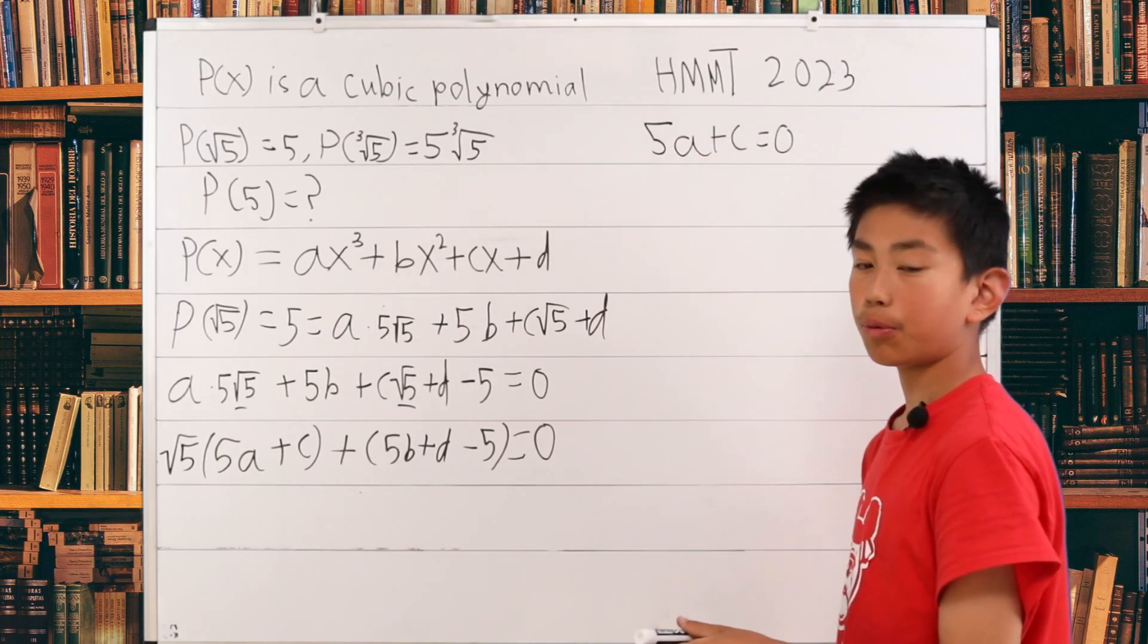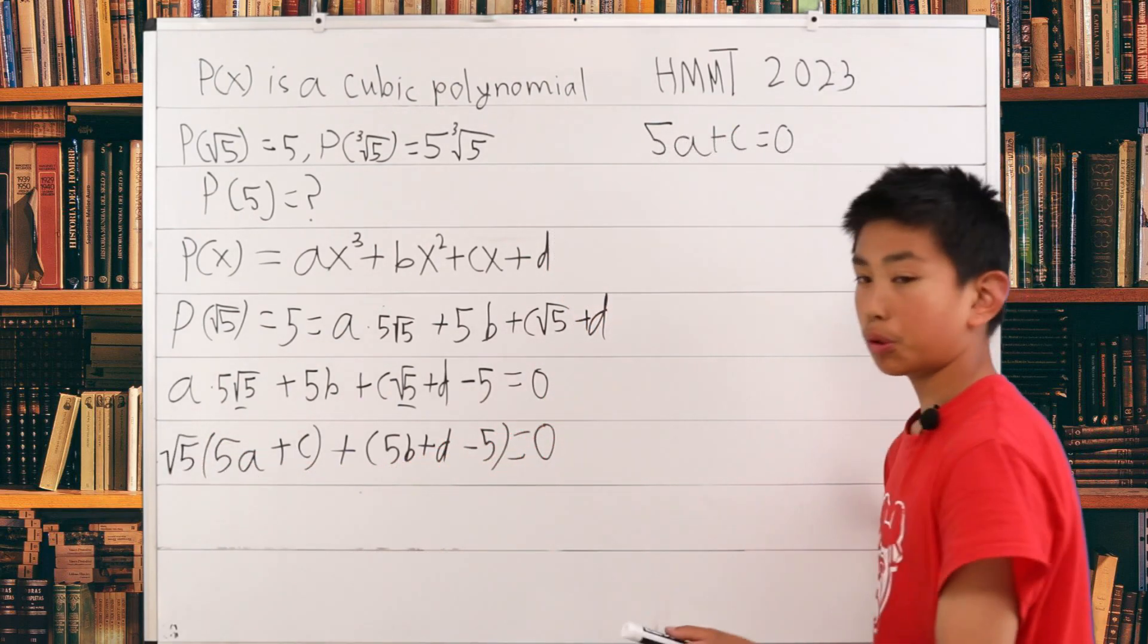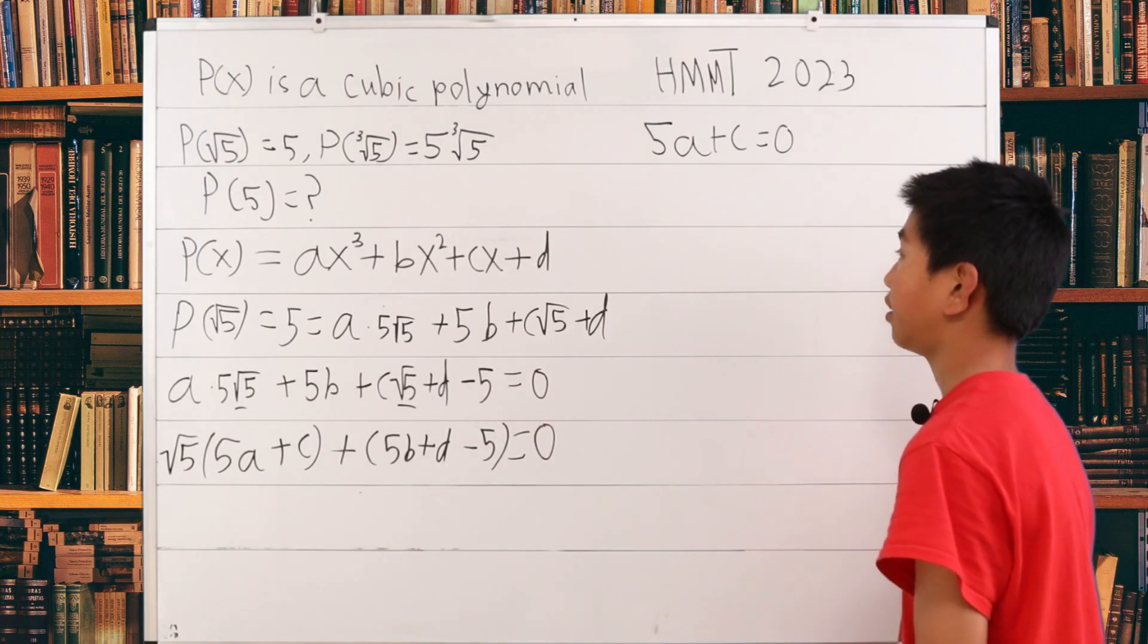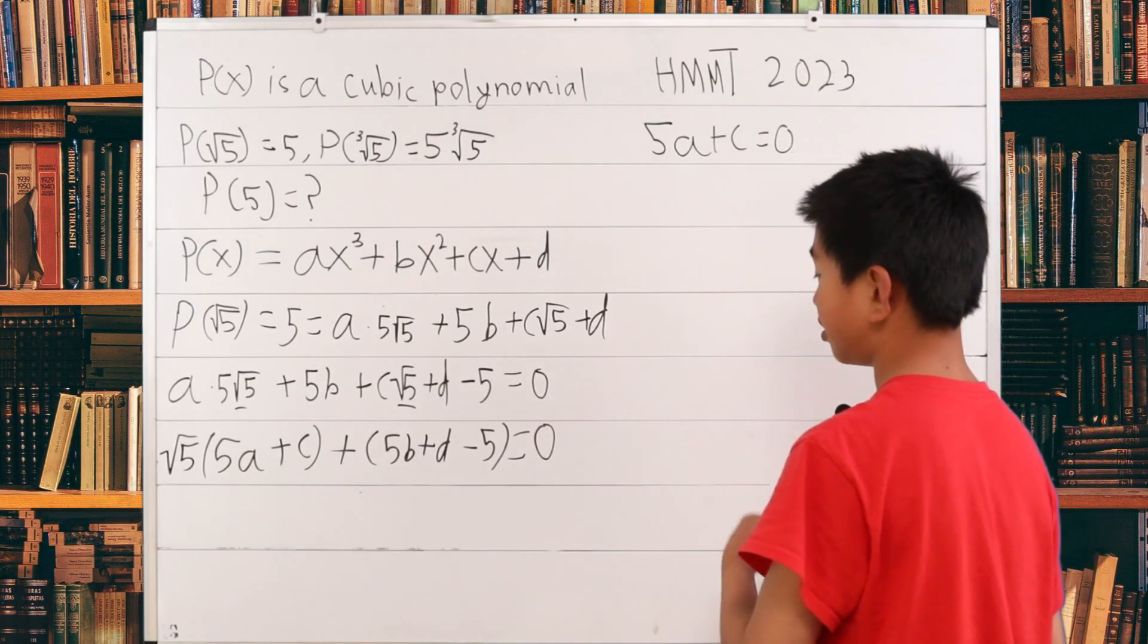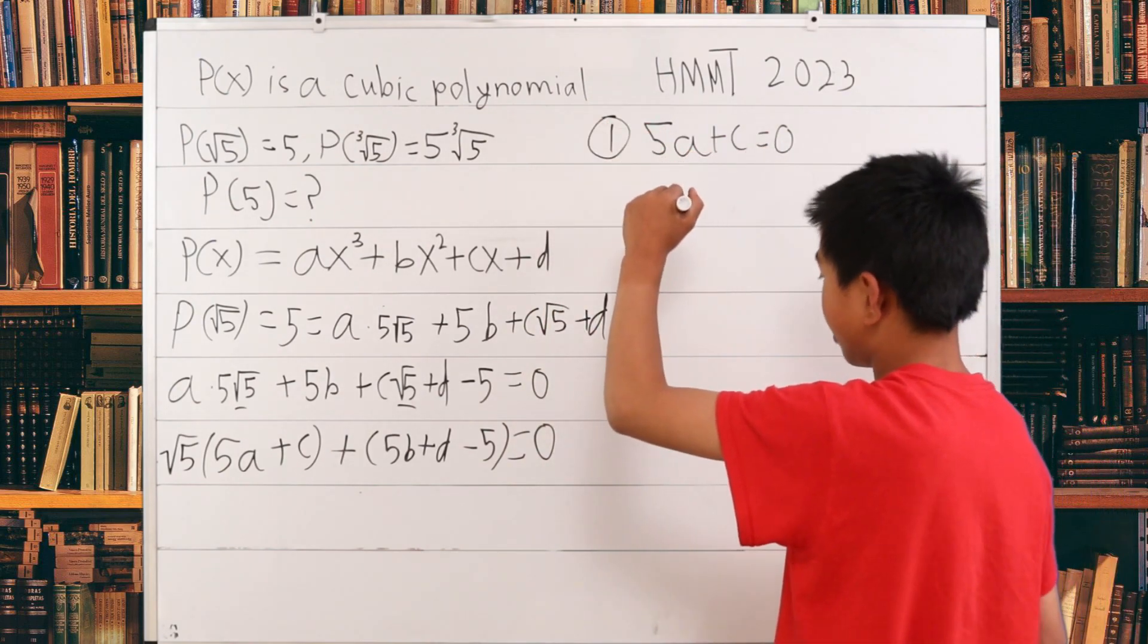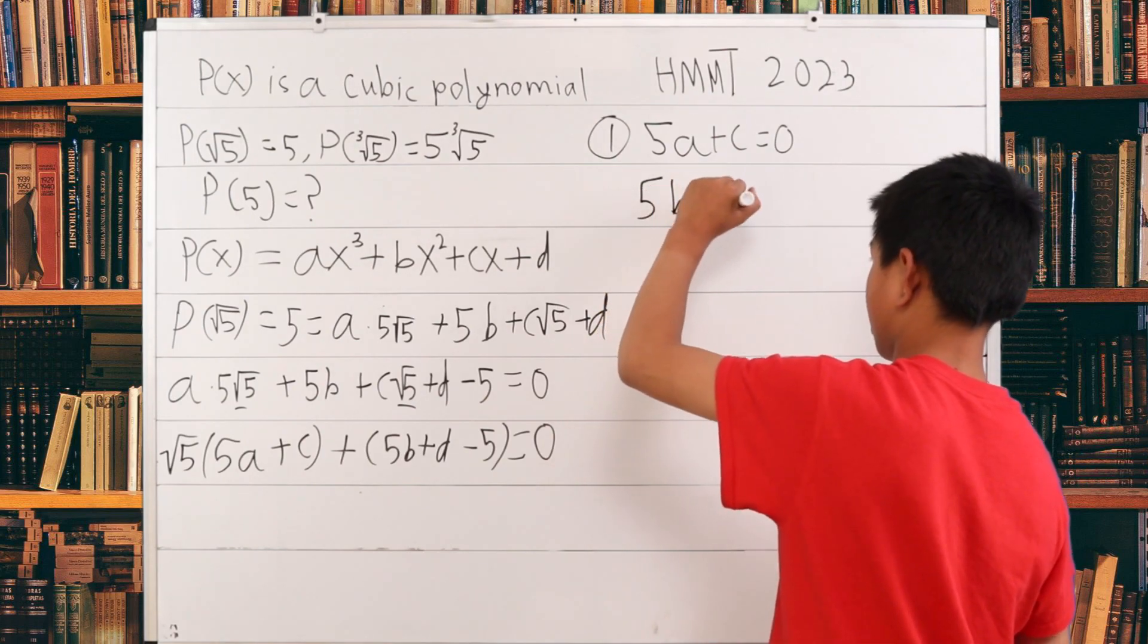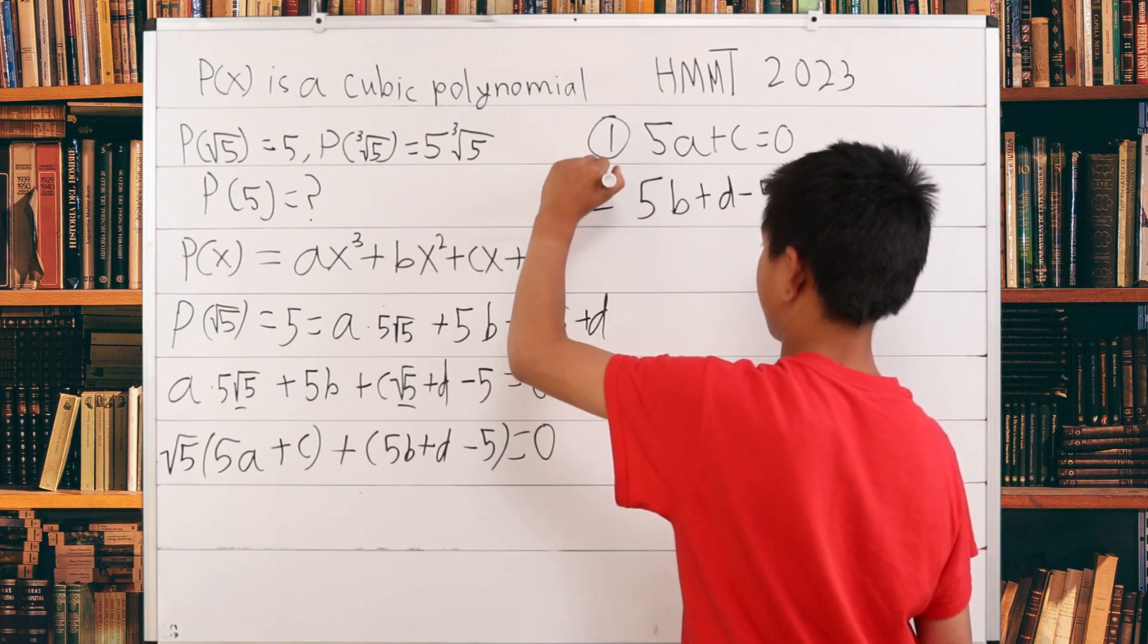So 5a + c = 0. You might be wondering why I didn't include the √5. The √5 is irrational and therefore irrelevant. We have two formulas: this is the first one, 5a + c = 0, and our second one is 5b + d - 5 = 0. That is our second one.